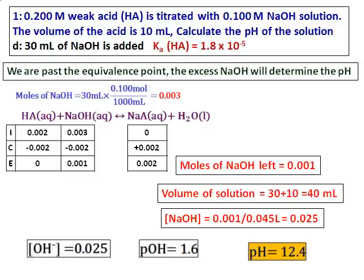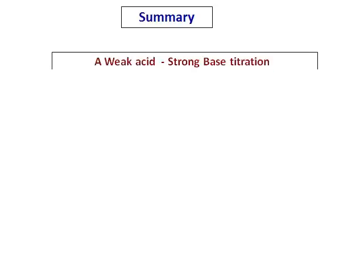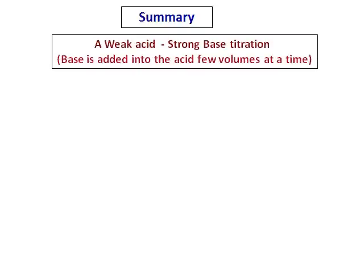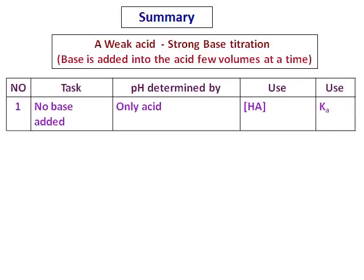Let us summarize what we have learned. In one page, here are the equations to use for a weak acid–strong base titration as you keep adding base to the acid. The first case is when no base is added — determine the pH from the ionization of the acid using its concentration and the Ka equation.